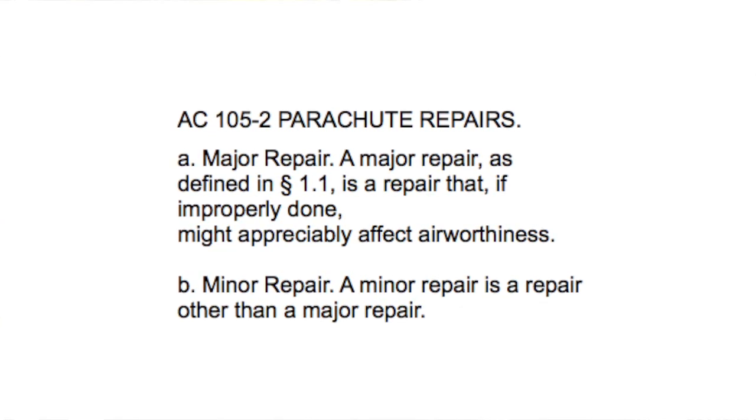A minor repair is a repair other than a major repair — that's got to be my favorite definition. C, major or minor repair determination. When there is a question about whether a particular repair is major or minor, follow the manufacturer's instructions. In the absence of the manufacturer's instructions, riggers should use the FAA Parachute Riggers Handbook and Poynter's Parachute Manual as a guide. If the procedure calls for a master rigger, it should be considered a major repair.